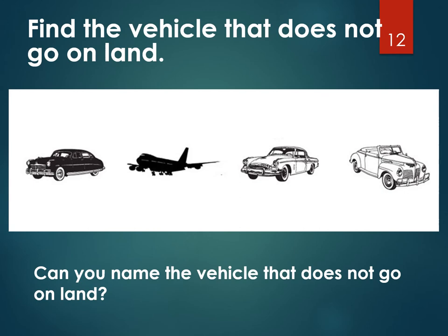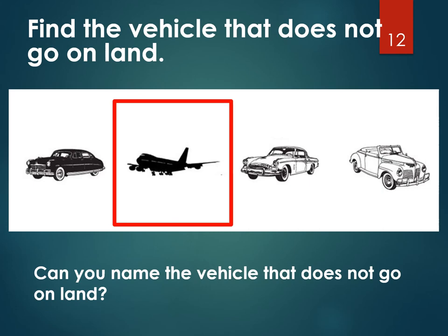We have some nice pictures here. Can you find the vehicle that does not go on land? Which vehicle doesn't go on land? It's this one — can you name that vehicle? It's an airplane. And where do airplanes go? They fly in the sky. Have you ever been in an airplane? What about the others? They are all cars. And where do cars go? They go on land. Good job. Let's go to the next question.